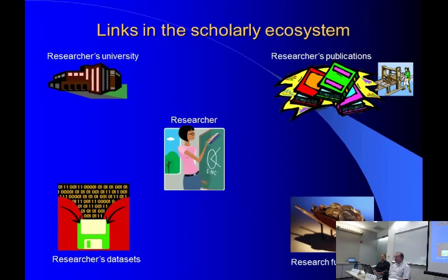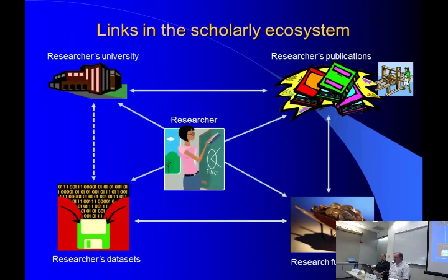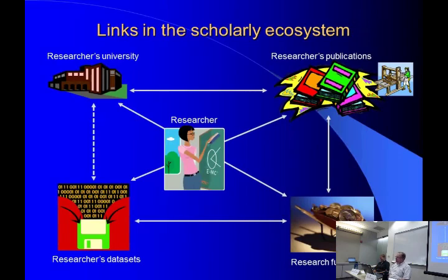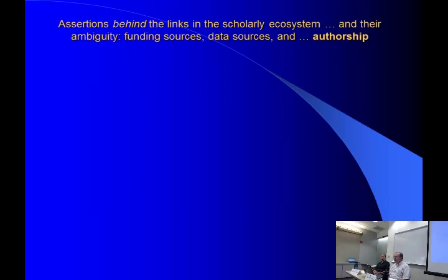We also have research funders, who want to know: if we're funding this researcher with a grant, what data sets are being produced? Where are they? How are they being preserved? What publications are being produced? And are those publications placed in open repositories for public downloading? Other researchers may want to know where to find the data set associated with a publication, or conversely, what publication was based on a given data set. There are a lot of questions floating around, and the way we've been answering them is based on assertions subject to ambiguity — there is no close linkage between these different elements of the scholarly ecosystem.